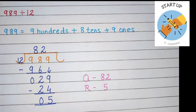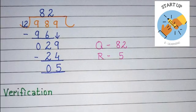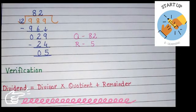Do you know, kids, we can check our division sum by a formula to see whether it is correct or incorrect? Today I will share that formula with you in this video. This formula is also known as the verification formula: Dividend = Divisor × Quotient + Remainder.